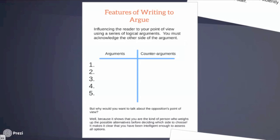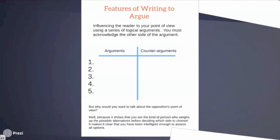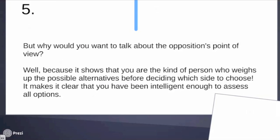Features of writing to argue: effectively you are influencing the reader to your point of view using a series of logical arguments, but you must also acknowledge the other side of the argument. We call it a gentle nod to the other side — you're not going to say as much about the other side as you would your own point of view, but you do need to acknowledge it. By acknowledging the other side you show the examiner that you are balanced, intelligent, and have assessed all options before deciding which side to choose.